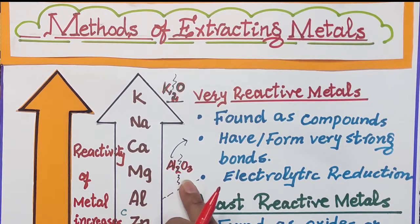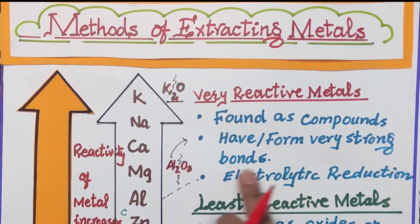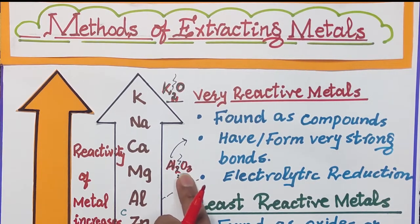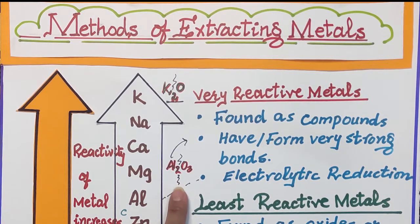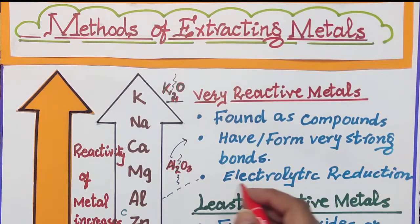Metals found as compounds have formed very strong bonds. This aluminium forms a very strong bond with oxygen that cannot be broken by introducing a reducing agent. The question is how we are going to extract this metal from its compound — and the answer is electrolytic reduction.